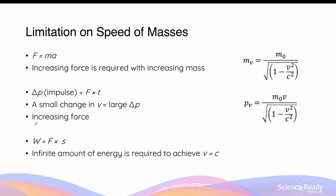Now why is this impossible? The work done — that is the energy input on an object — is equal to the force applied to the object multiplied by its displacement. If the force required eventually approaches infinity, that means the work done, or the energy required, also will approach infinity. In order for an object with any mass to reach the speed of light, it would need an infinite amount of energy. This is the reason why objects with mass will never be able to reach the speed of light, nor exceed it.